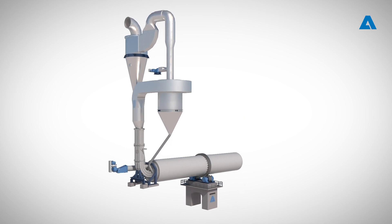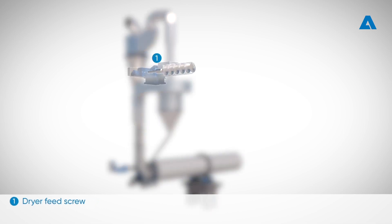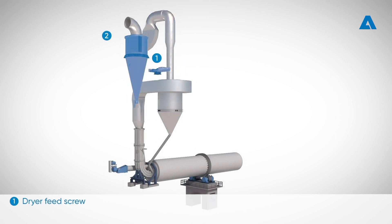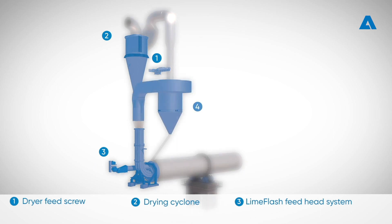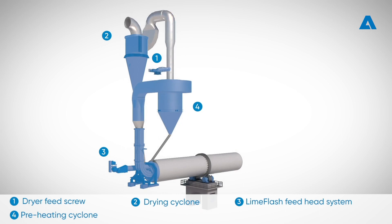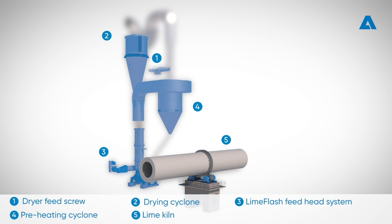Andritz 2 Cyclone's LimeFlash H system contains the following main components. Drier feed screw enables lime mud entering into the LimeFlash H system. The first cyclone, called the drying cyclone, separates the dried lime mud from the flue gas. The lime kiln feed head system allows the process to operate at a higher feed and temperature without plugging. The preheating cyclone is the second cyclone, which represents a new feature of the LimeFlash H system, where lime mud is further heated up. Lime mud flows by gravity through the preheating cyclone through a chute to the rotating lime kiln.